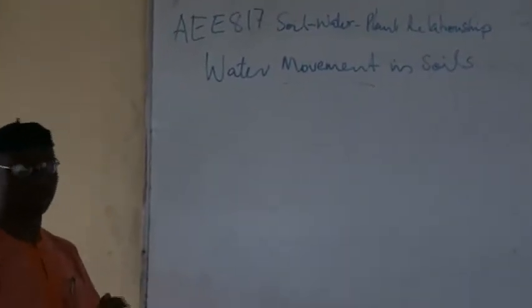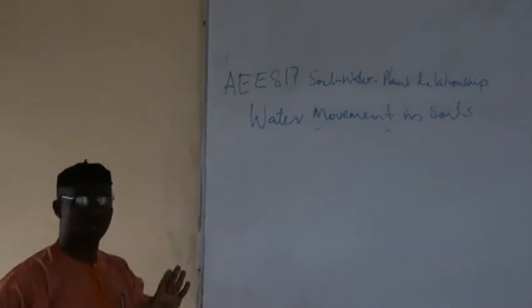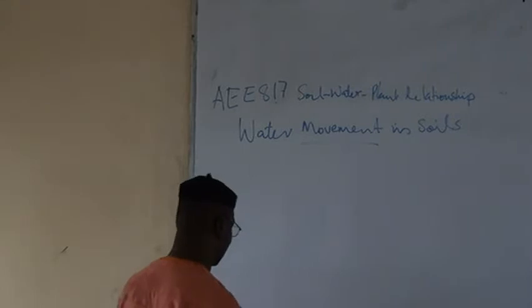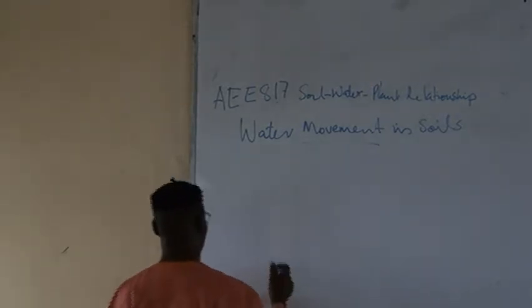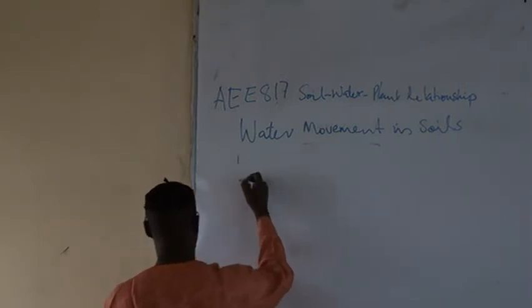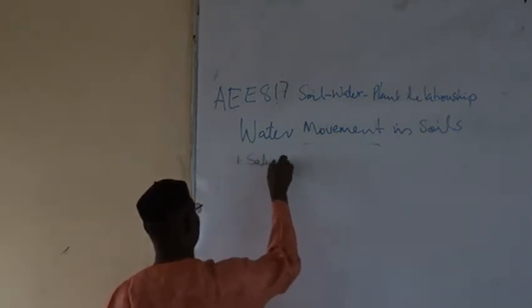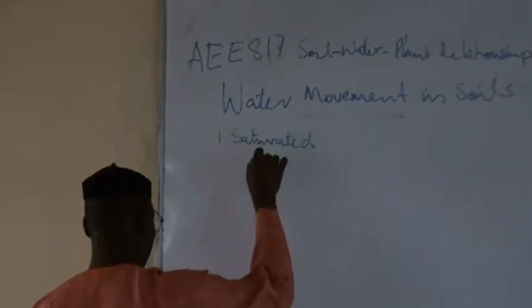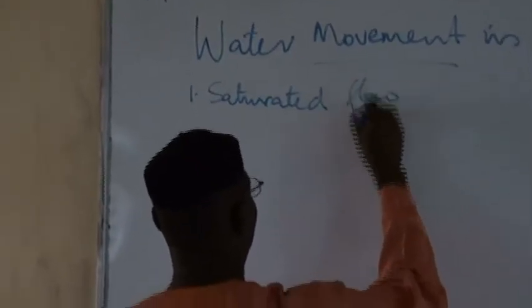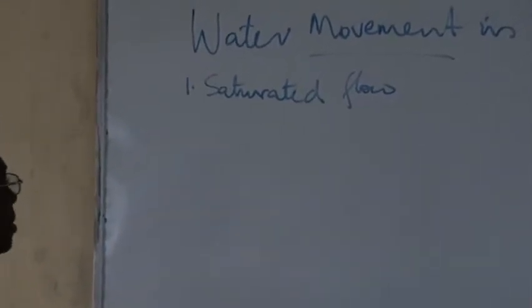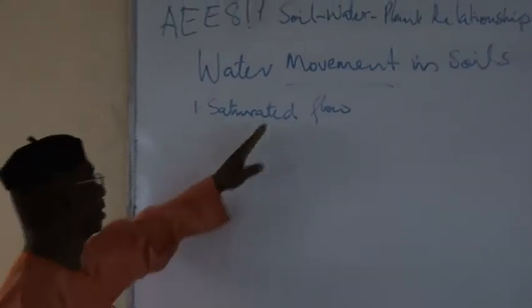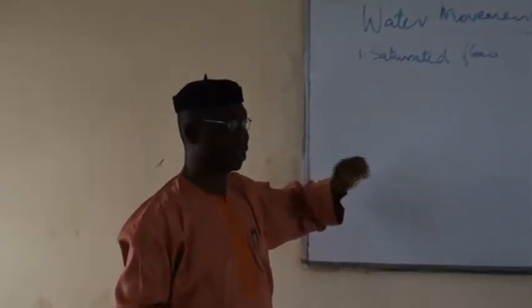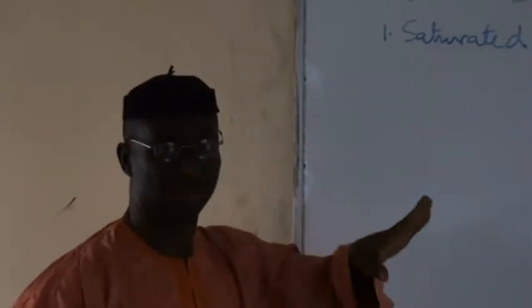Water movement in soils. Water moves in soils under different conditions. To affect basic conditions, one, we have water movement under saturated flow. On this point, the water is saturated — all the pore spaces are filled with water, saturated with water. The soil is at field capacity. So there is no potential, no potential in reality.